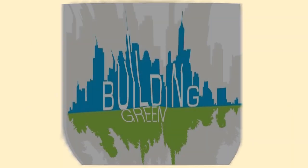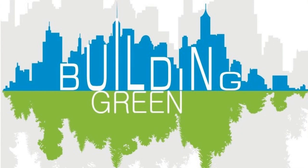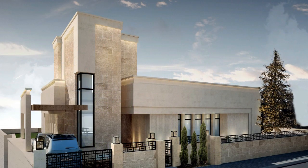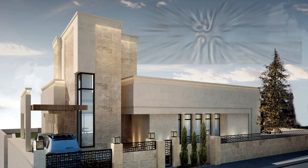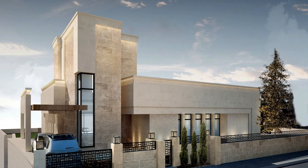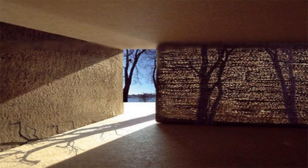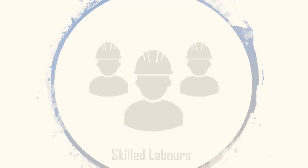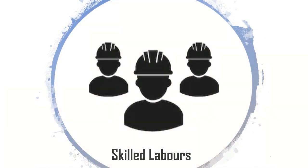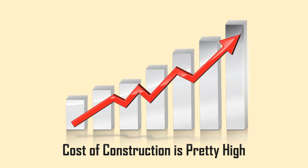Translucent concrete is commonly used in the construction of green buildings. Since it can transmit light, this type of concrete is considered an energy saving method of construction. It also provides very good aesthetical appearance for a building. However, casting a translucent concrete requires skilled labor and the cost of construction is pretty high.